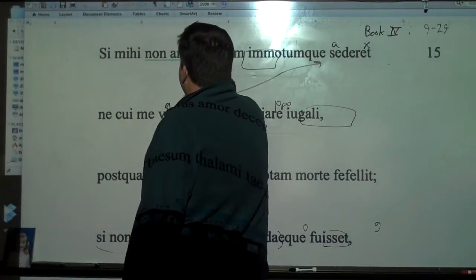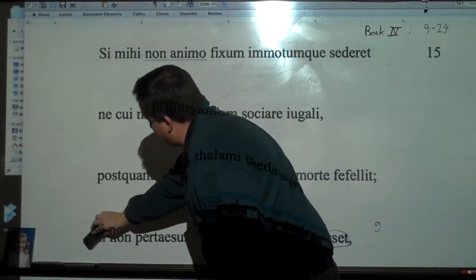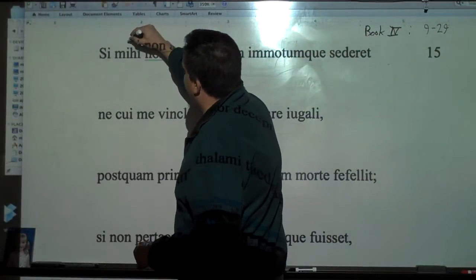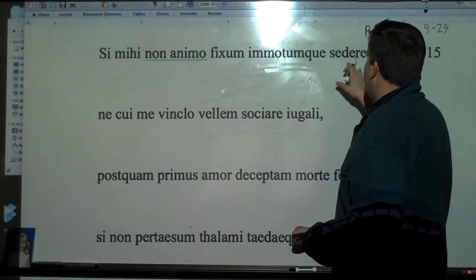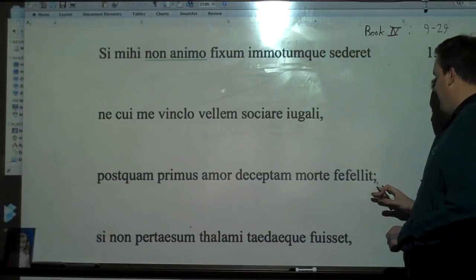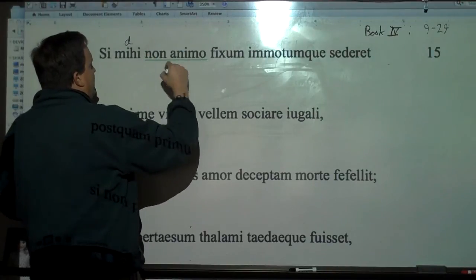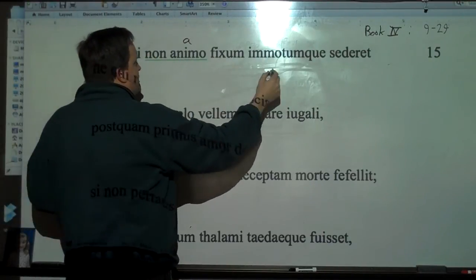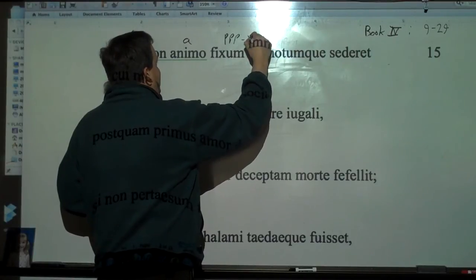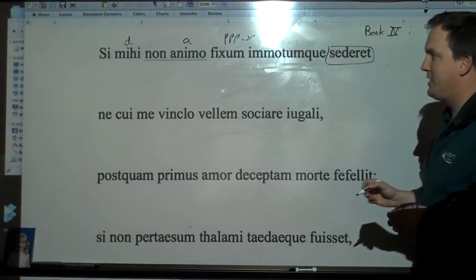Alright, now we're getting to the top sentence here. This is a real tough one, and it kind of goes on for a bit. And she's trying, she's using these nice conditionals here, and it's a little tricky. So, si mihi. If, for mihi, non animo fixum immotumque sederet, ne cui me vinclo vellem sociare iugali, postquam primus amor deceptam morte fefellit. Alright, so sed mihi, but to me, dative, non animo, nice ablative, fixum et immotum. Now, these are PPPs, and I'd say these are nominatives describing it, both of them. And then sederet is imperfect subjunctive, and this is going to be a present contrary to fact.